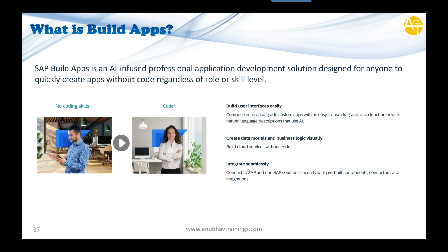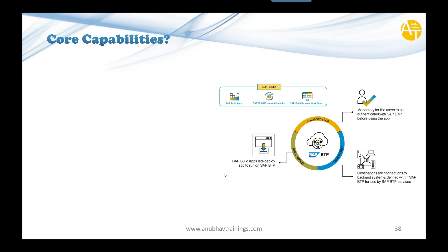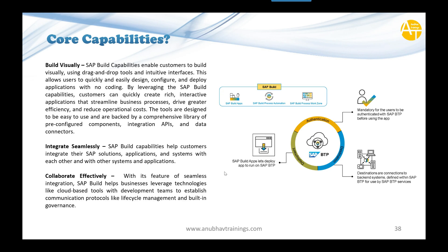The SAP Build portfolio also includes Build Process Automation and Build Work Zone as additional services. Now let's understand the key components and core capabilities of SAP Build Apps. First is 'Build Visually' — you can use the build capabilities to design tailor-made solutions. Customers can build visually using drag-and-drop and intuitive interfaces, allowing them to quickly design, configure, and deploy applications without coding experience. The tool is designed so that anyone from a technical or non-technical background can easily use pre-configured components, interface elements, integration APIs, and data connectors to pull data.